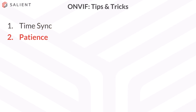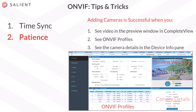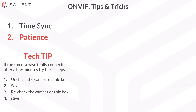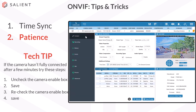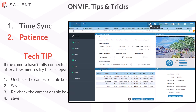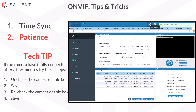The next tip is patience. When adding cameras, be patient. You'll know that your camera is successfully added when you can see video in the preview window in CompleteView, you can see the ONVIF stream profiles, and you can see the camera details in the device info pane. Occasionally this can take a few minutes. If your camera still hasn't connected after a few minutes, on the camera connect screen, uncheck the camera enable box, save the configuration, then re-enable the camera and save the configuration again. This should prompt a re-sync with the server and the camera, and you should see your video, the profiles, and the device info.